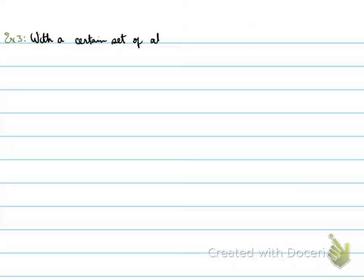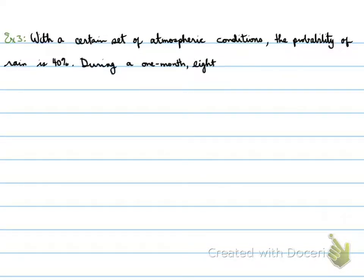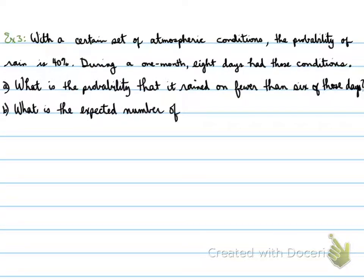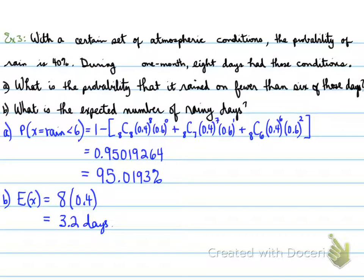Example 3. With a certain set of atmospheric conditions, the probability of rain is 40%. During a 1-month period, 8 days had those conditions. What is the probability that it rained on fewer than 6 of those days? And what is the expected number of rainy days?